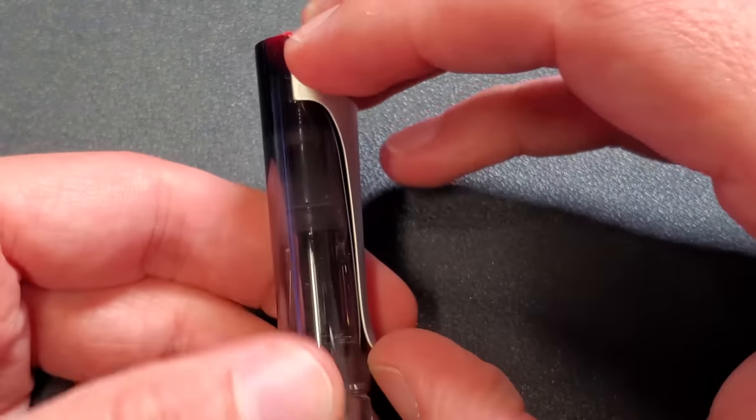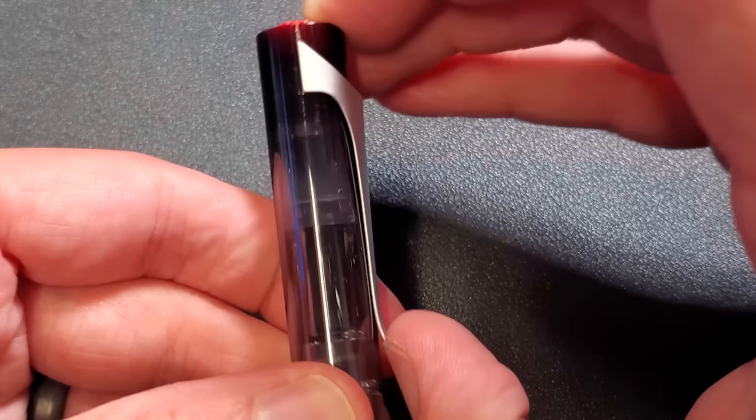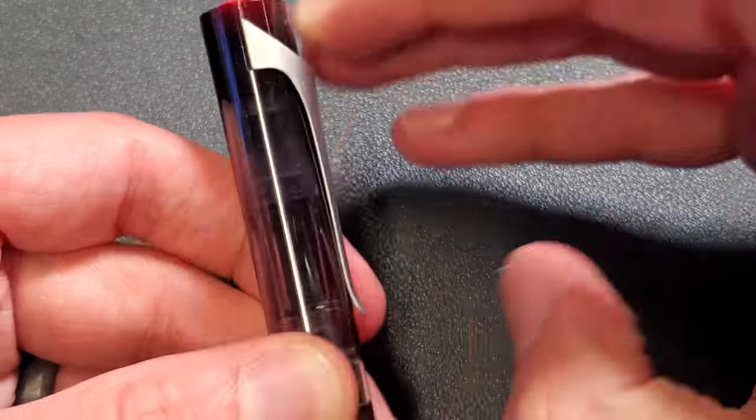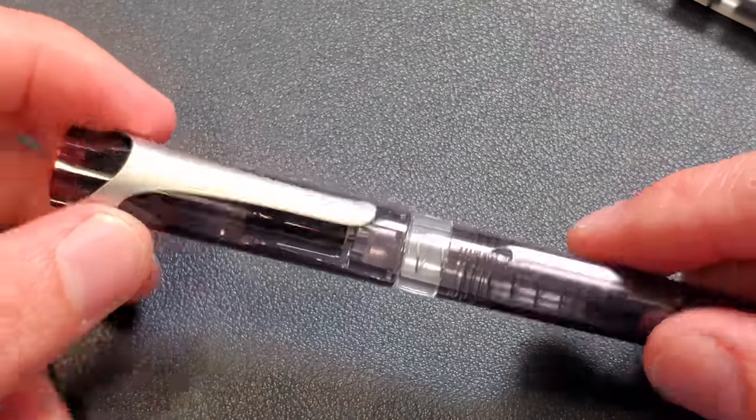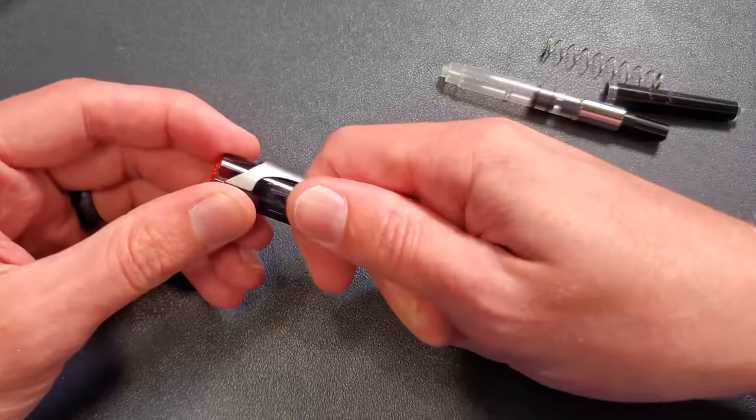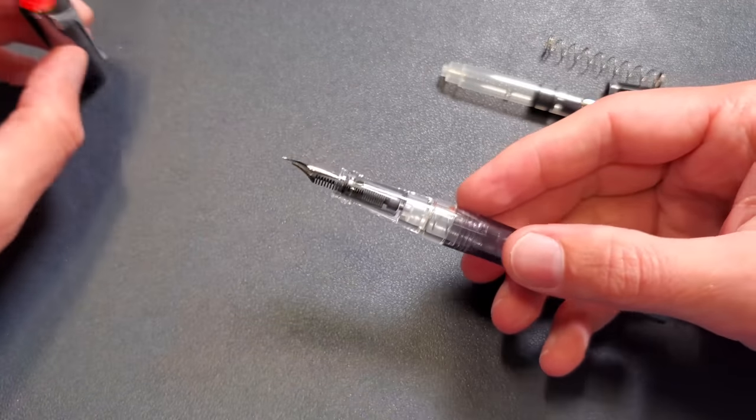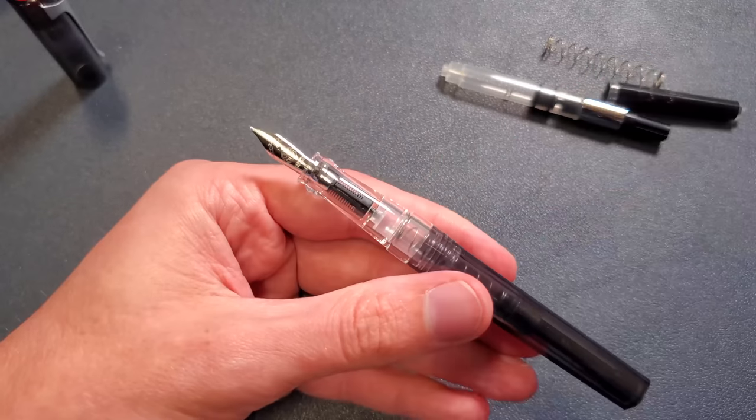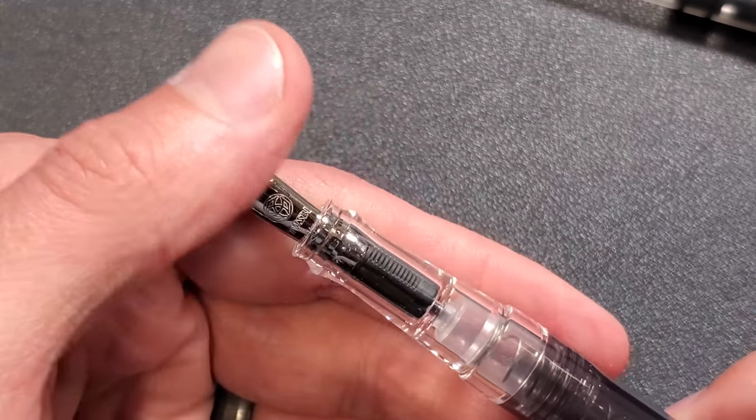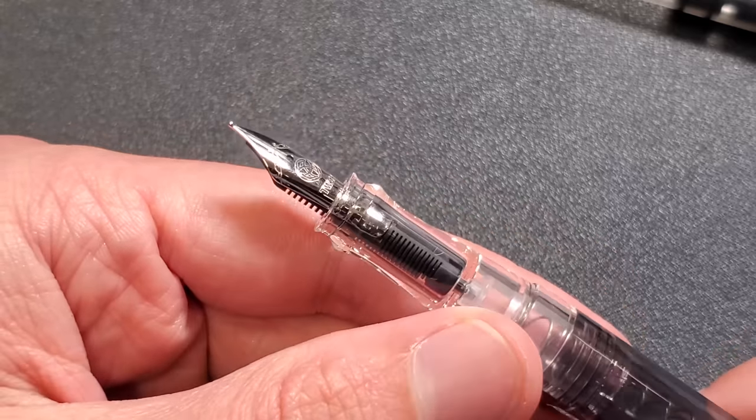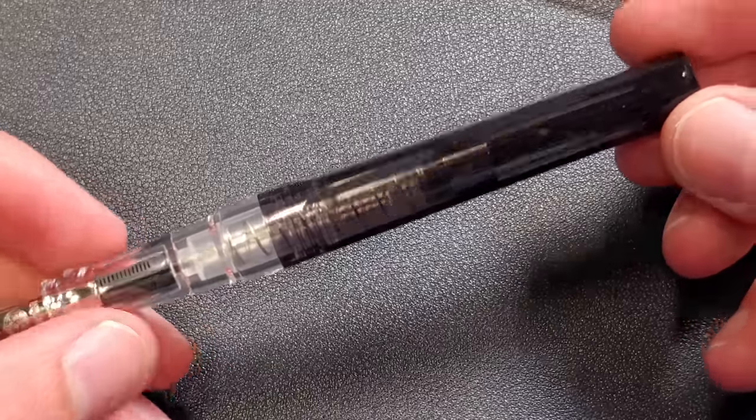Let's see how springy this thing is. Oh my god, that's tight. Yeah, that's tight. That's a tight, tight clip. But it's going to do the job. Alright. Pop that off. It is a snap cap. And there we have the familiar nib that is on the Twisby Mini, Twisby Eco. And we've got a spring in here. But wait. There's also a spring out here. We've got two springs.